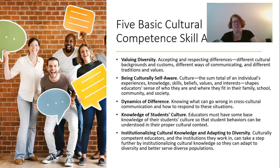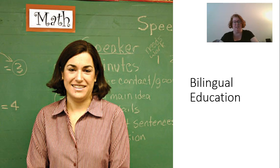The final competency involves institutionalizing and adapting to diversity — knowing how institutions work to institutionalize racism and then working to change that in your school and society so that we can provide equal and advanced opportunities for students who might be facing disadvantages, and to best serve the students in your classroom. The National Education Association can provide a much deeper understanding of these five competency skill areas.